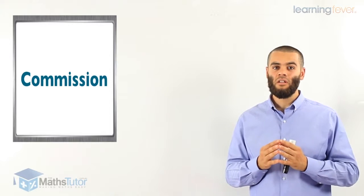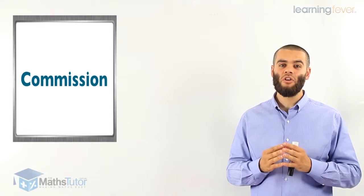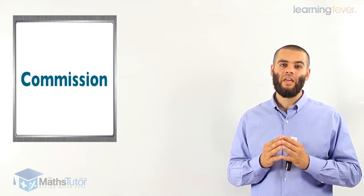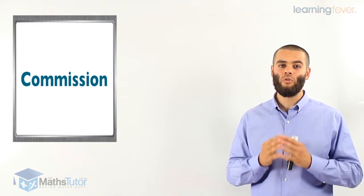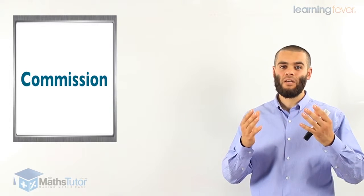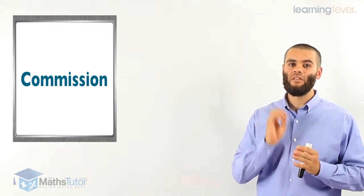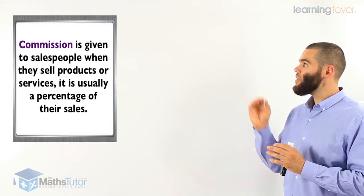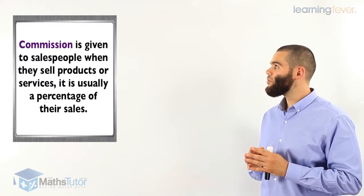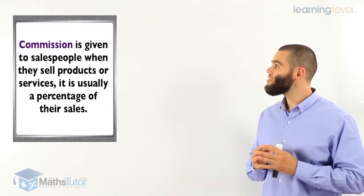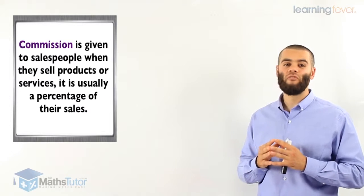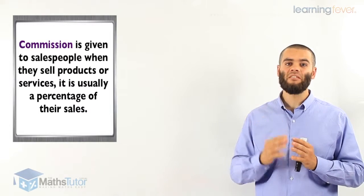So commission is basically a percentage of the sales that these agents or sales reps or salespeople actually make. The more they sell, the more they're going to earn. Let's see the theory. Commission is given to salespeople when they sell products or services. It is usually a percentage of their sales.